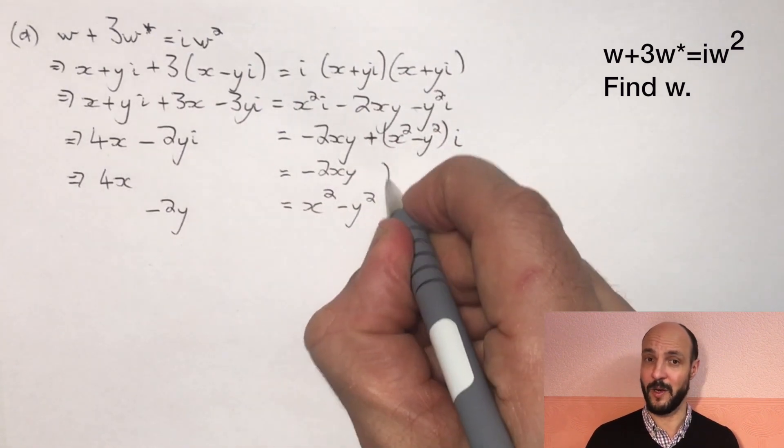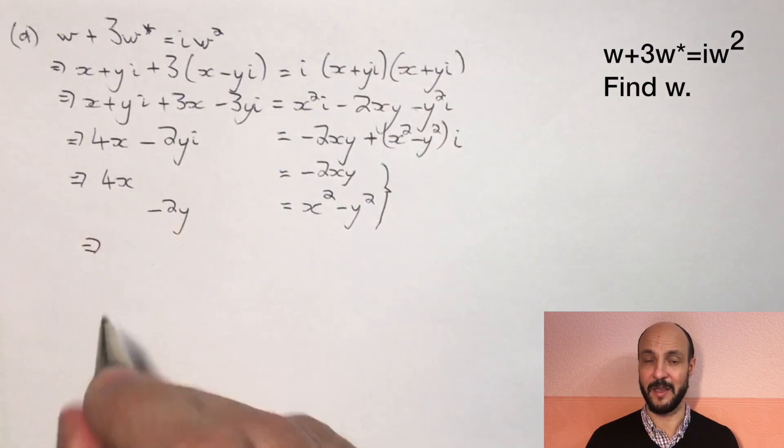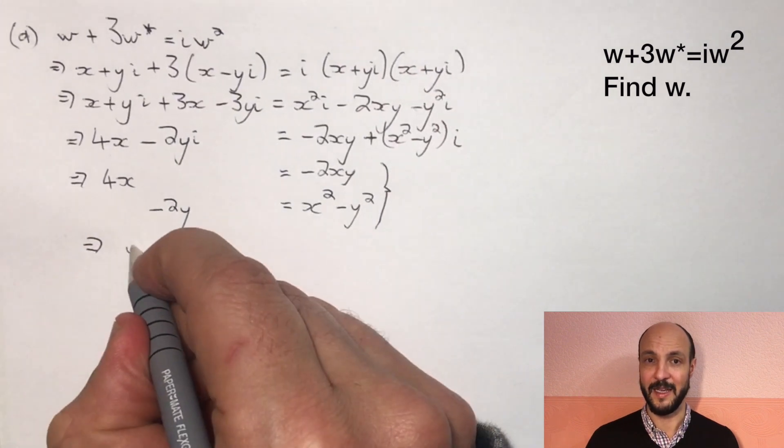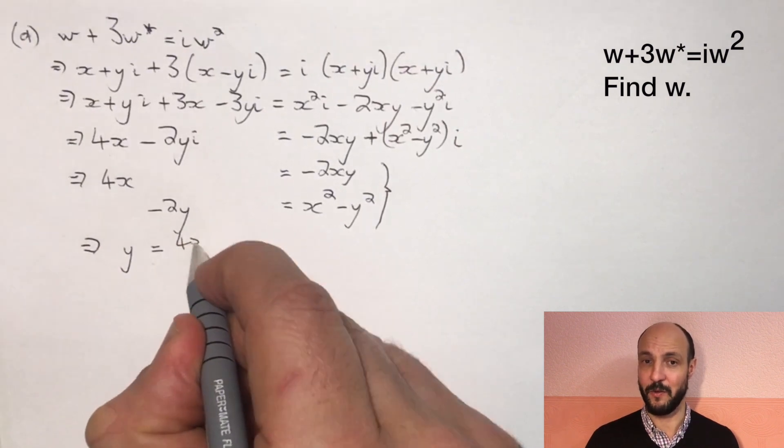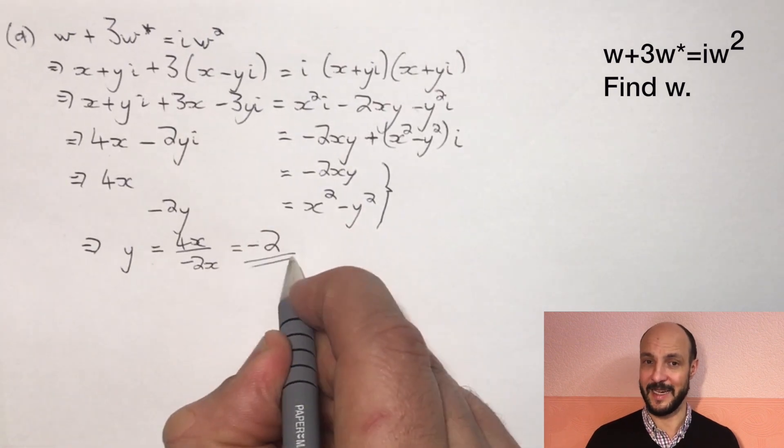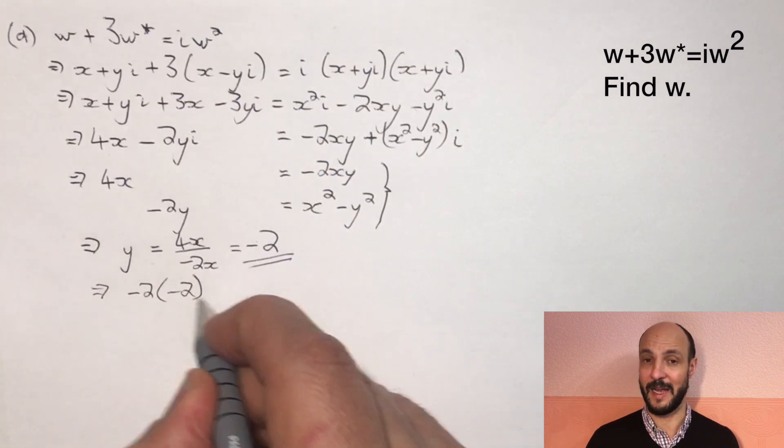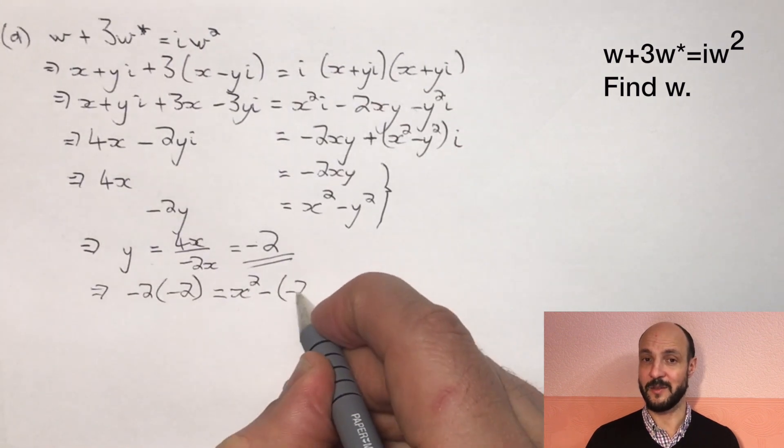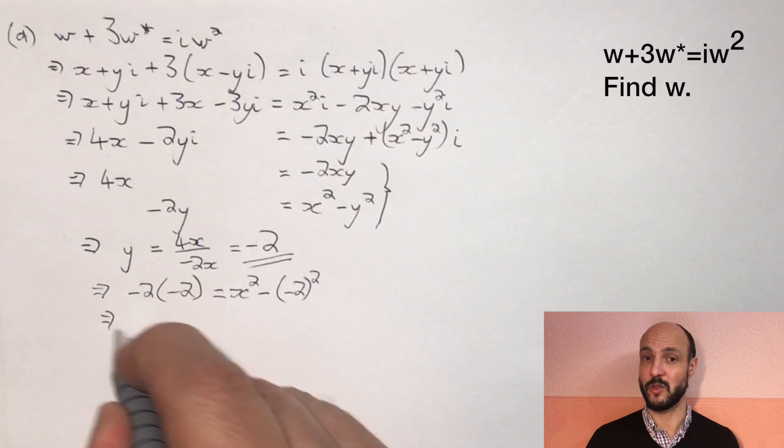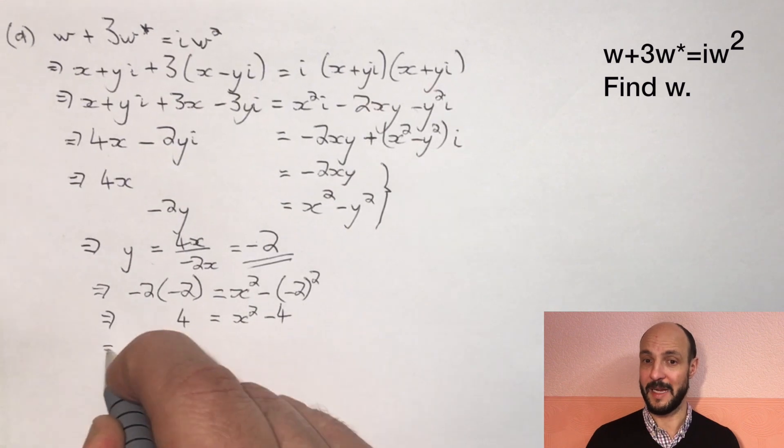So in terms of the real parts we have 4X equals minus 2XY, and in terms of the imaginary parts we've got minus 2Y equals X² minus Y². Now from the first equation we can rearrange that to find out the value of Y. Because if we just divide through by minus 2X we've got Y is 4X over minus 2X, so Y is simply minus 2. And then if we substitute that into the second equation we get minus 2 times minus 2 equals X² minus minus 2 squared. So 4 equals X² minus 4, so X² equals 8 and X is the square root of 8 or 2 root 2. So we've found X, we've found Y, we can write our W as 2 root 2 minus 2i.